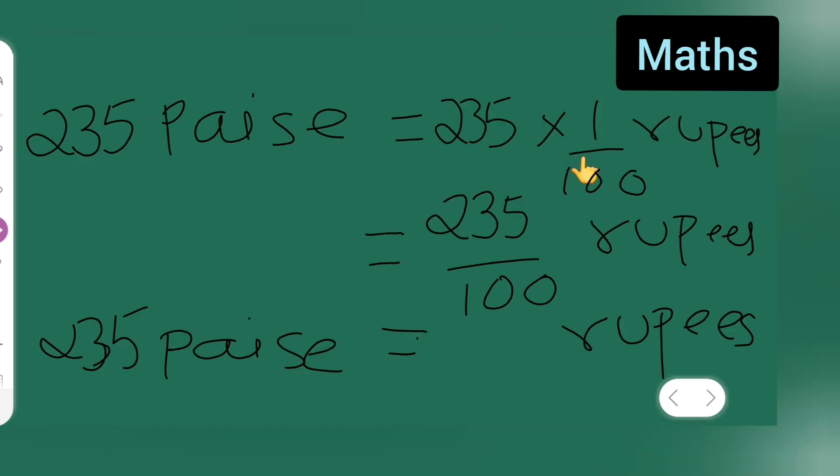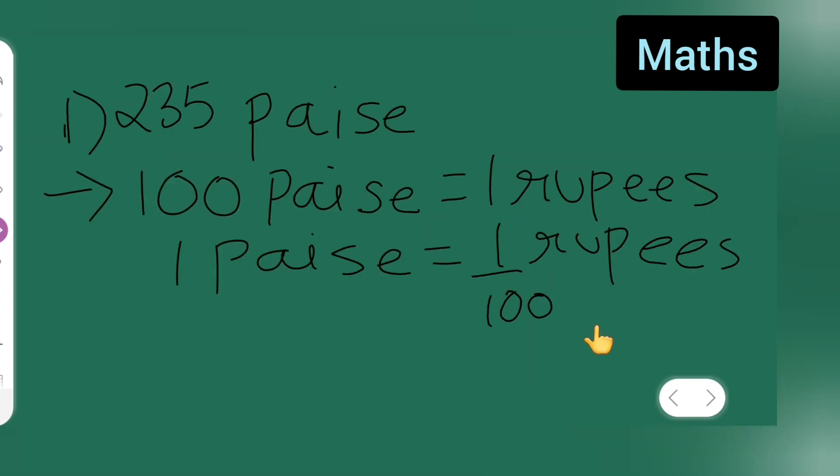Next, what I'll have to do is 235 paise is equal to 235 multiplied with 1 upon 100 into rupees, because I am converting this paise into rupees. When I'm converting paise into rupees, what is 1 paise is equal to 1 upon 100 rupees.